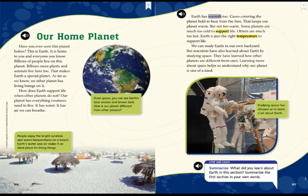Earth has warmth too. Gases covering the planet hold heat from the sun. That keeps our planet warm, but not too warm. Some planets are much too cold to support life. Others are much too hot. Earth is just the right temperature to support life.